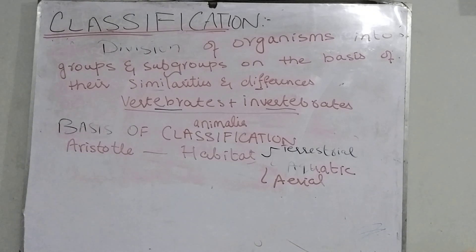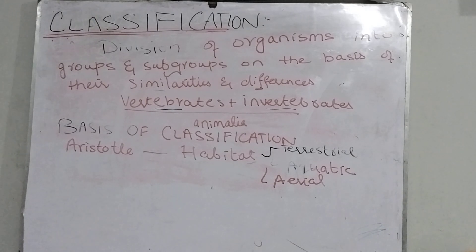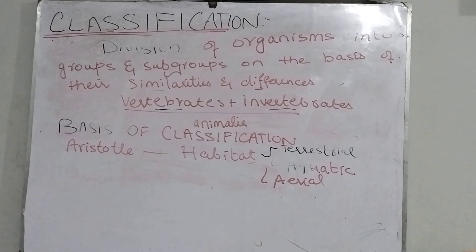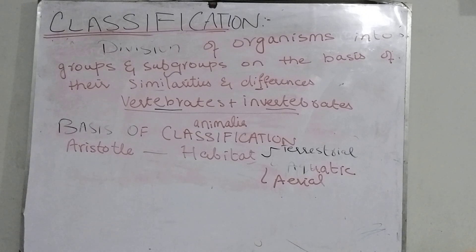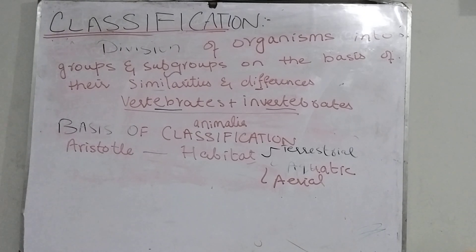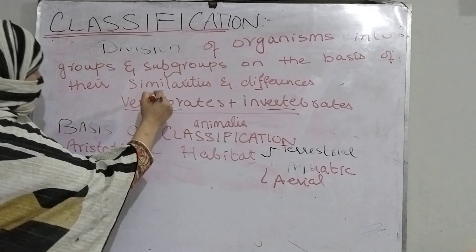Why did it fail? Because we have lizards, snakes, and humans — if we look at these land animals, they have no similar characteristics. Similarly, turtles and fish, or bats and pigeons, have no similar characteristics. So this system of classification has failed.